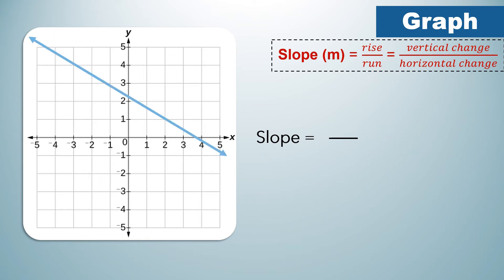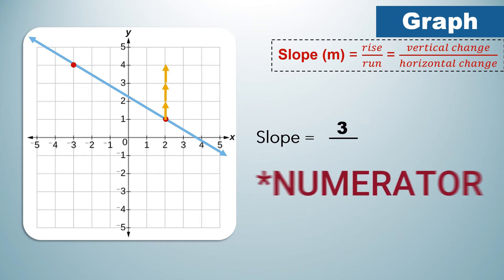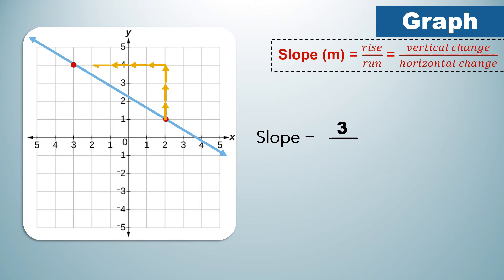Third example. Identify any two points on this given line. Count the rise: 1, 2, 3. So 3 is the numerator of our slope. Then for the run: 1, 2, 3, 4, 5. As you can see, the direction of the line is going to the left, therefore our slope is negative and the horizontal change is 5. Therefore, the slope of this given line is negative 3 over 5.